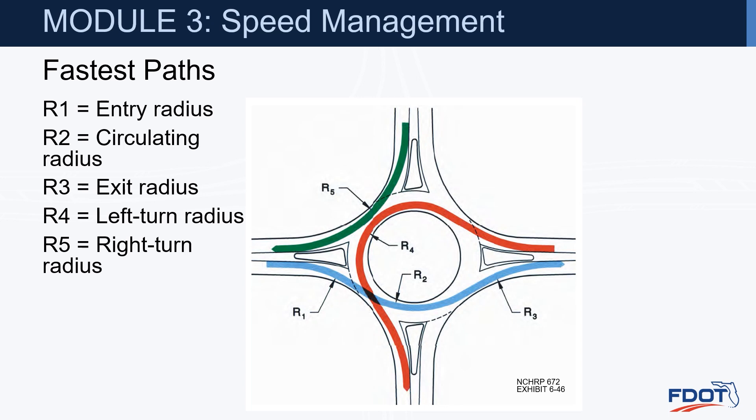This exhibit from NCHRP 672 shows the five different fastest paths, which include R1 — the entry radius; R2 — the circulating radius; R3 — the exit radius; R4 — the left turn radius; and finally R5 — the right turn radius.